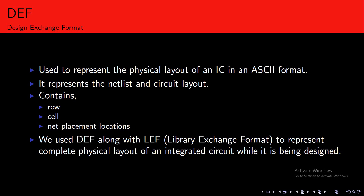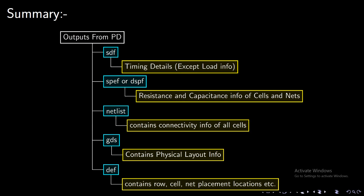To summarize, the outputs from physical design tools are SDF, SPF or DSPF, netlist, GDS, and DEF. SDF contains timing details. SPF contains resistance and capacitance information of cells and nets, whereas DSPF also includes inductance values. The netlist contains connectivity of all cells. GDS contains physical layout information. DEF contains row, cell, and net placement locations.